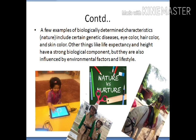Examples of nature include genetic diseases, eye color, hair color, skin color, and any characteristics inherited from parents. Other things like life expectancy and height have a strong biological component but are also influenced by environmental factors and lifestyles.